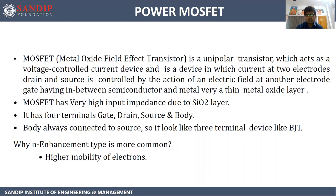MOSFET has four terminals: gate, drain, source, and body. The body is always connected to source, so it looks like a three-terminal device like BJT. Now the question arises: why is N enhancement type more common? It is common because, as compared to P type, N is always preferred due to the higher mobility of electrons.